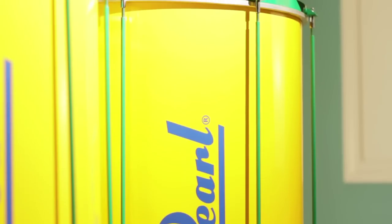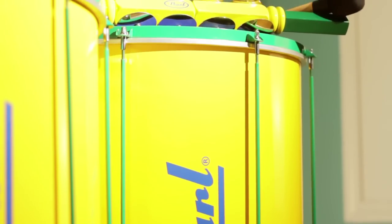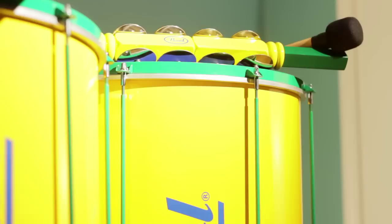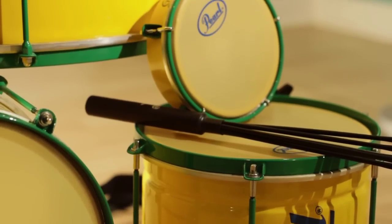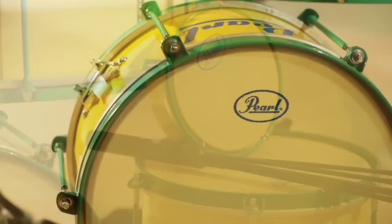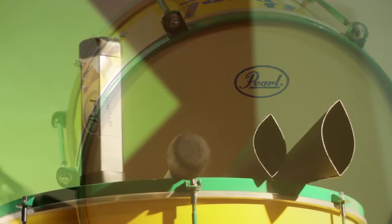It includes a 20 inch surdo with a surdo mallet, a 10 inch repinique with a strap, a 6 inch tambourine with a tambourine stick, a 12 inch caixa, one pair of agogo bells, and a hex ganzá.